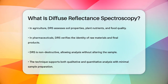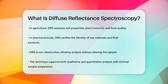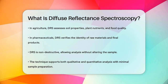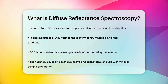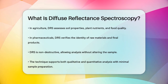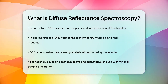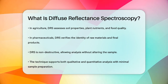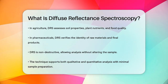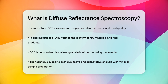One of the best things about DRS is that it's non-destructive, meaning you don't have to alter the sample to analyze it. This makes it a powerful tool for both qualitative and quantitative analysis without the need for extensive sample preparation. So the next time you hear about scientists analyzing materials without touching them, they might be using diffuse reflectance spectroscopy to get the job done.